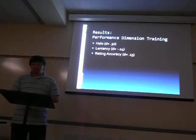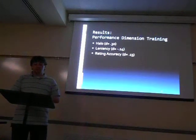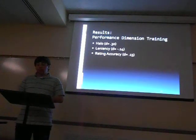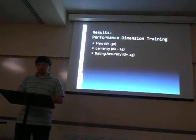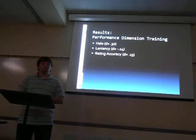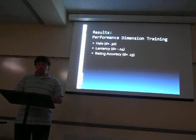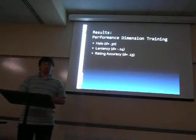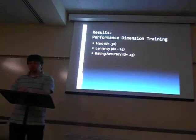Performance dimension training appears to be moderately effective at reducing halo errors with an effect size of 0.30. However, results indicated a small overall increase in leniency errors as shown by the negative effect size of 0.14. Performance dimension training also had a small effect size of 0.13 for increasing rating accuracy. However, there were no data available for observational accuracy.